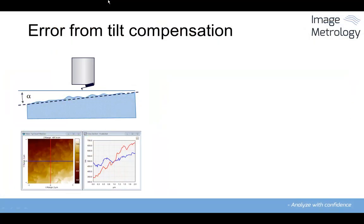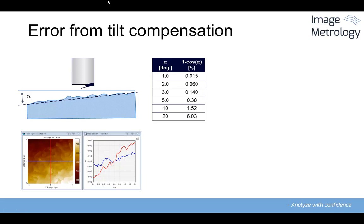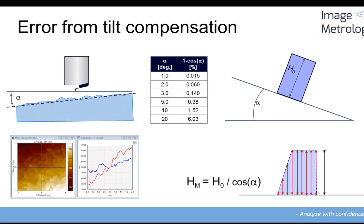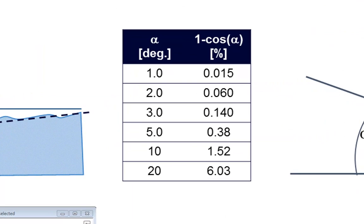Note that if the tilt is larger than a few degrees, plane correction will induce significant errors in the measured dimensions. Take a look at this rectangular structure here. When subtracting a plane from the scan, we see that the height of the structure is smaller than expected. 2.5 degrees misalignment will give 0.1% error, whereas 8 degrees will give an error of 1%.